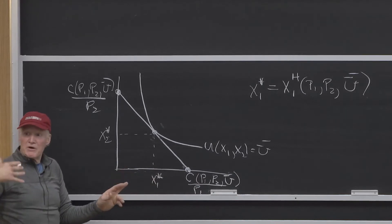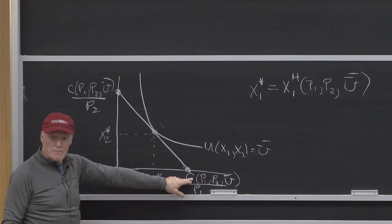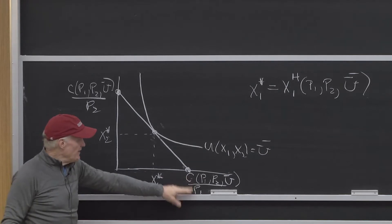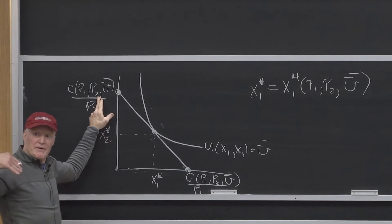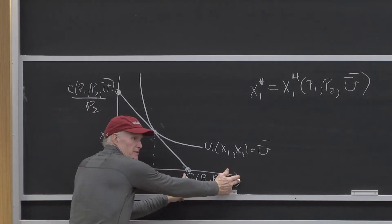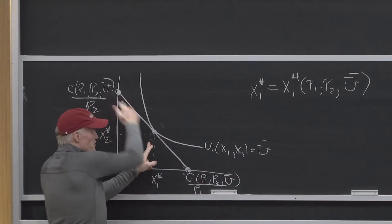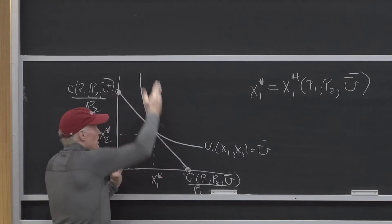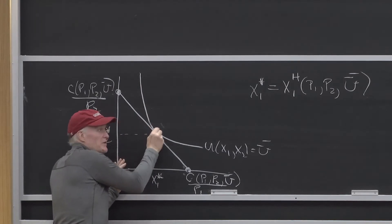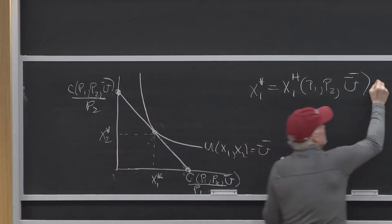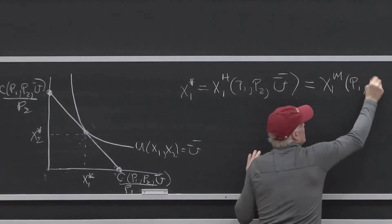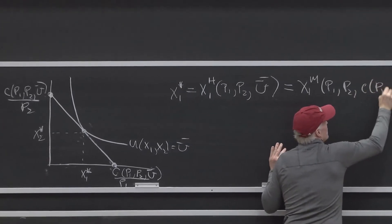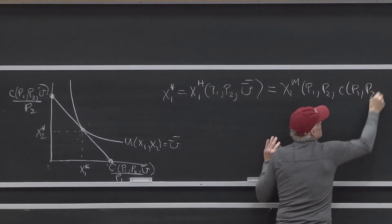So, now let's think about it from a Marshallian world. If I gave you exactly that much income at these same prices, what point would you choose? I'm going to flip it around now. I'm going to give you exactly this much income, which gives you this budget constraint, which implies you're going to maximize utility. Well, that's going to put me right back where I started, right at this point here. So, this has to be equal to X1 M of P1, P2, C of P1, P2, U bar.